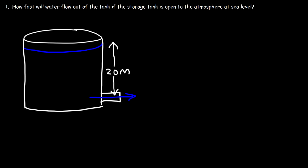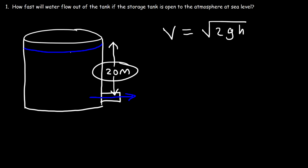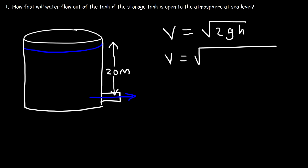To do this, we can use Torricelli's theorem, which is associated with this equation. The efflux speed is the square root of 2gh, where h is the height difference between the water level and the level where the water leaves. So in this case, h is 20. The speed is simply the square root of 2 times the gravitational acceleration times the height difference, and this works if it's open to the atmosphere.